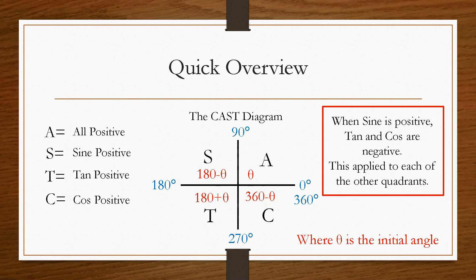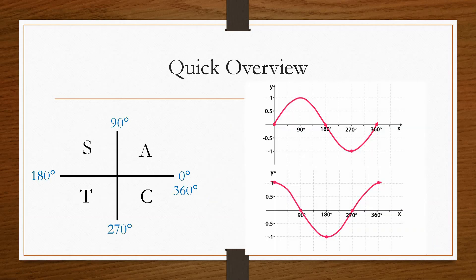So that is the basics of how the graph works. That's what we need to remember. However, we're going to look at how these values came about, because if you understand this, then it makes using the CAST diagram so much easier, and in general, trig itself.